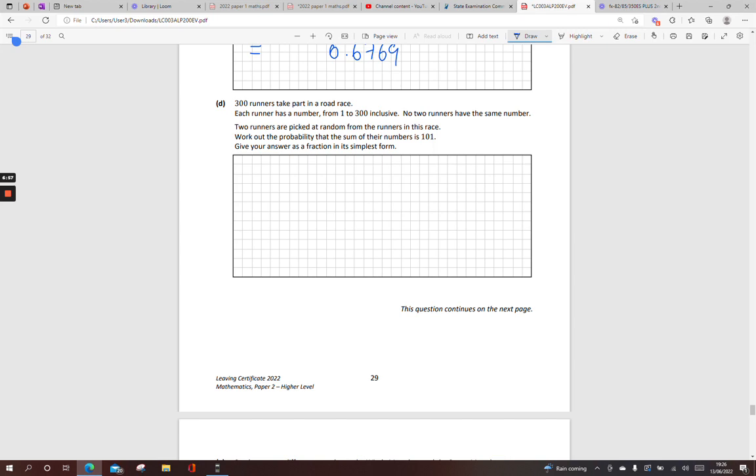Next one. 300 runners running a road race. Each runner has a number from 1 to 300 inclusive. No two runners have the same number. Two runners are picked at random from their race. Work out the probability that the sum of their numbers is 101. So what I can get there, I can get a 1 and a 100. Or you can get like a 2 and a 99. I remember all the time this is OR. Or you can get a 3 and a 98. Or you can get a 4 and a 97. And so on. But you'll see a pattern emerging. And the key one here is when you get to 50 and you'll get 51.